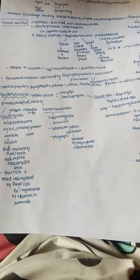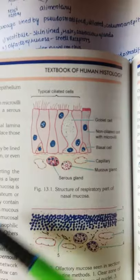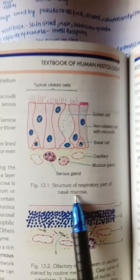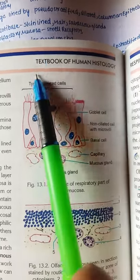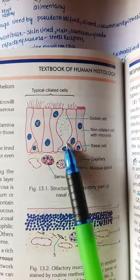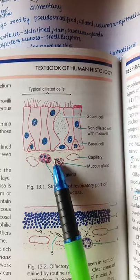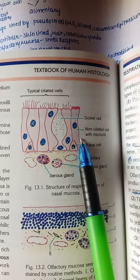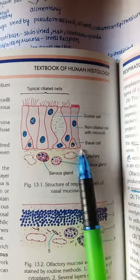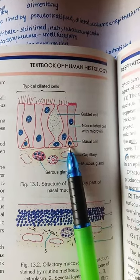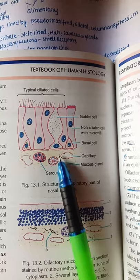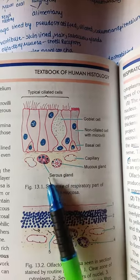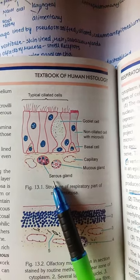Now let us check out these structures in a diagram. Here we can see the structure of the respiratory part of the nasal mucosa. These are the typical ciliated cells, this is a goblet cell, this is a non-ciliated cell with microvilli, and this is the basal cell, which replaces dead or lost cells. These are the capillaries, mucus glands, and serous glands.